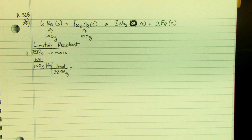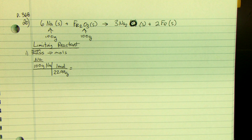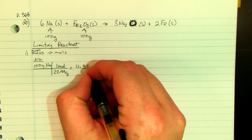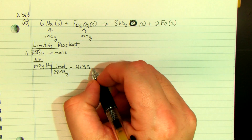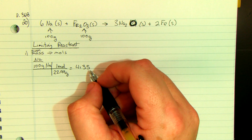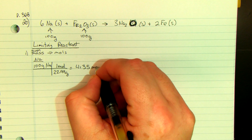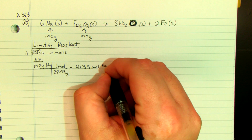I have the 100 and I have the 22.99 in the bottom. So what do I have to do? Divide. Divide those two numbers and you get 4.35 moles of sodium. I'm just going to round to two decimal places, so our answer may not be 100% the same as the book, but that's okay.